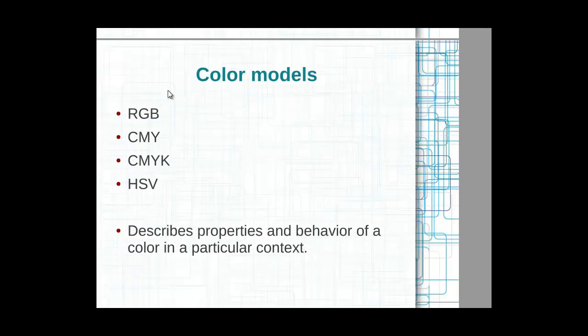These are the color models: we have RGB, CMY, CMYK, and HSD. A color model is used to describe the properties and behavior of color in a particular context. For example, units can be described in terms of the RGB system. CMY and CMYK are for printing purposes. HSD can be used in any context — you can play with the hue, the saturation which is the purity of the color, and the value which is brightness or lightness.